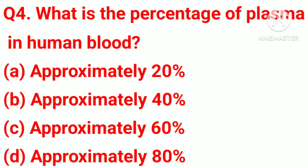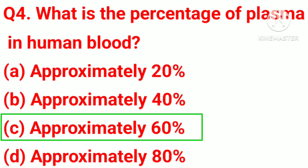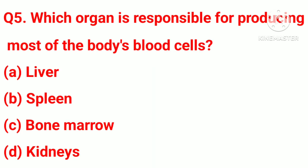Question number 4. What is the percentage of plasma in human blood? Option A, approximately 20%. Option B, approximately 40%. Option C, approximately 60%. Option D, approximately 80%. Correct answer: Option C, approximately 60%.